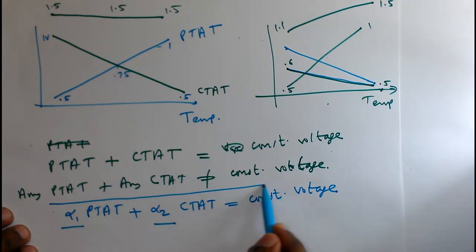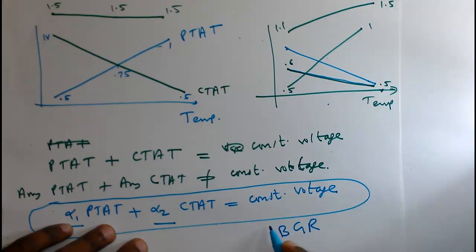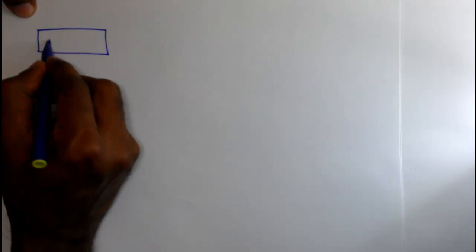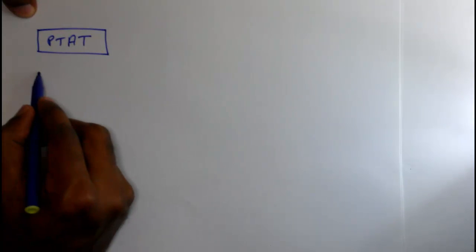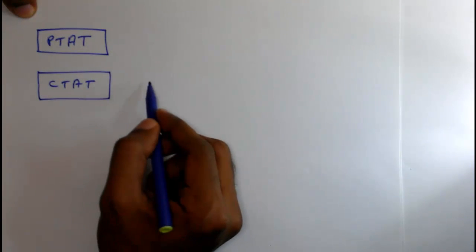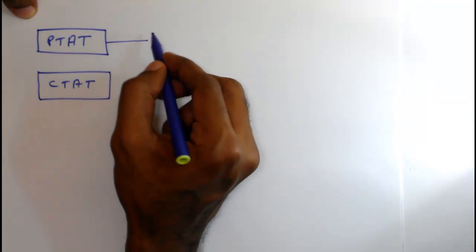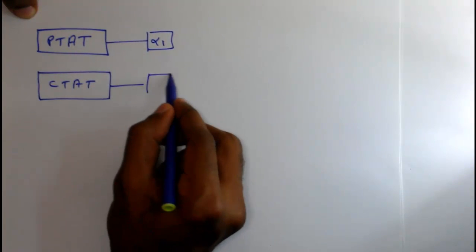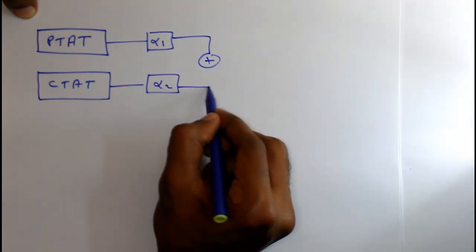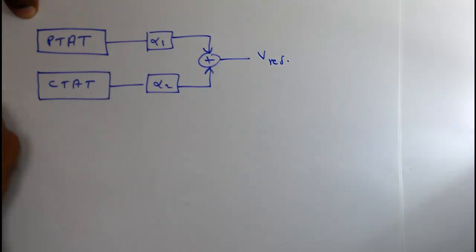We will design alpha1 and alpha2 in such a way that they cancel each other, so we will get a constant voltage. This is the basic idea of the band gap reference. We will implement this equation — alpha1 × PTAT + alpha2 × CTAT = constant — using a circuit. We will make a PTAT circuit, then a CTAT circuit, multiply each by their respective alpha, and add them together to get a constant reference voltage.